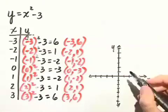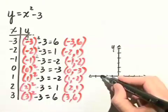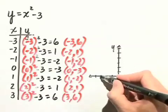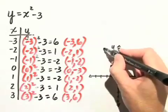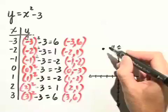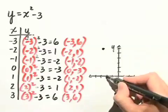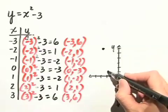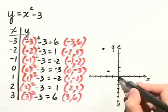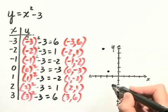Let's plot these points now. Starting with negative 3, we go negative 3 in the x-direction, and up 6 in the y-direction, and we plot that point. Negative 2 in the x-direction, 1 in the positive y-direction.